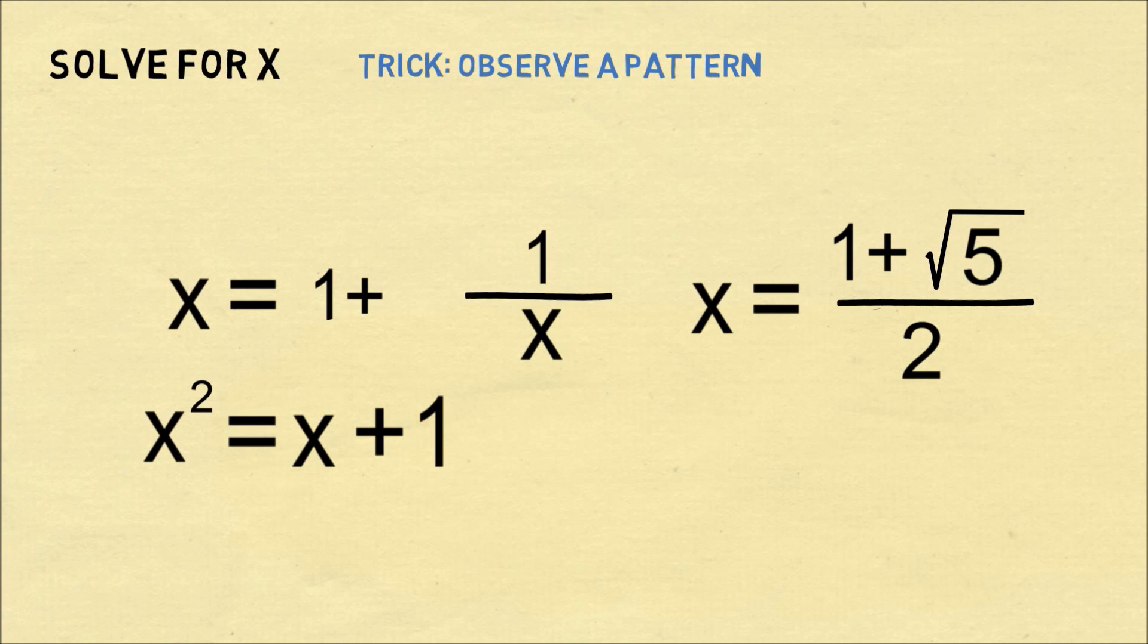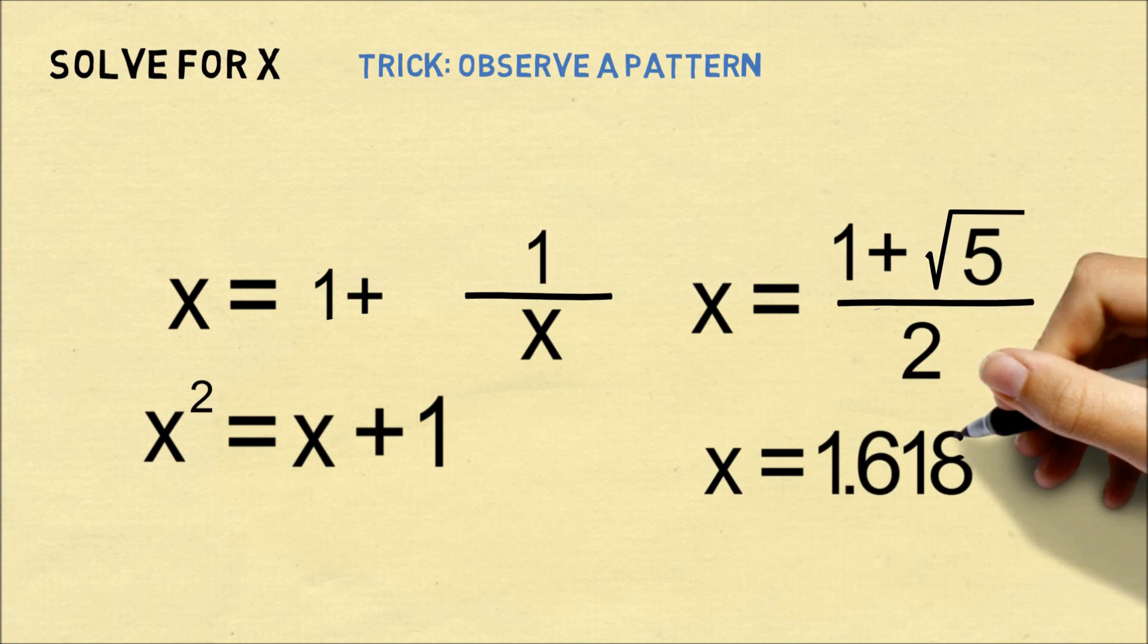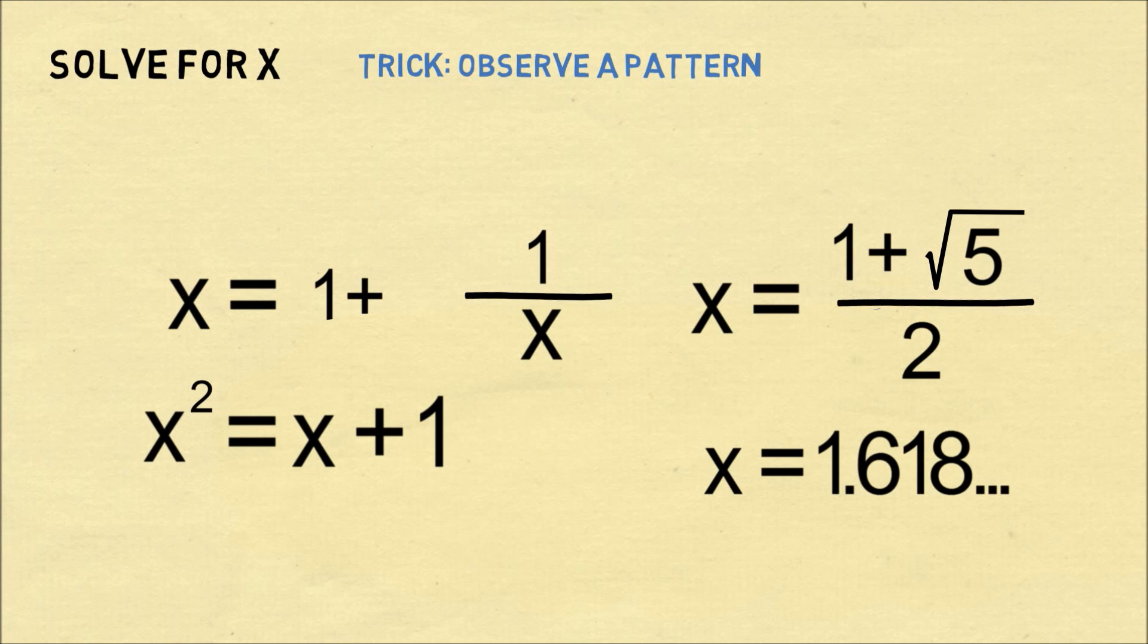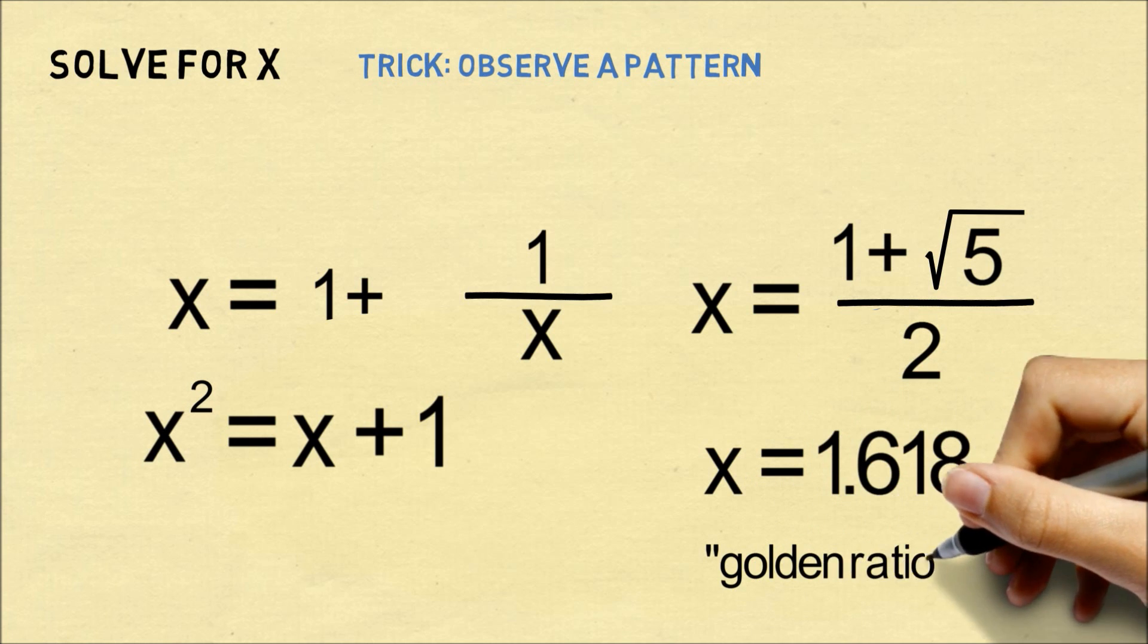Since x only had positive terms, we get rid of the negative solution. So x is equal to 1.618. And this is the Golden Ratio.